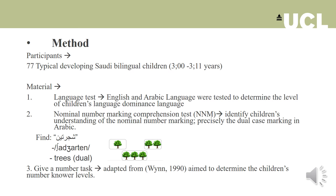We tested 77 typically developing bilingual Saudi children aged 3 to 3 years and 11 months. We tested their general comprehension in each language to determine their level of language dominance. We tested their understanding of the dual case in Arabic. And lastly, the give-a-number task was administered in order to determine children's number knower level.